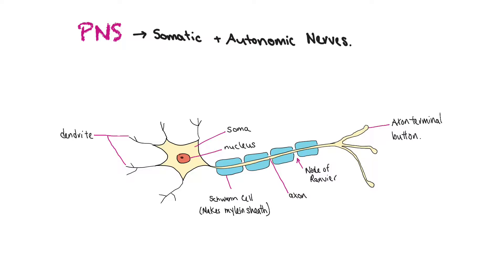Some neuro-autoimmune or neurodegenerative diseases actually attack the myelin sheath. Multiple sclerosis is an example of a disorder that causes the myelin sheath to be broken down — the immune system destroys your myelin sheath, and then you can't have certain nerve impulses.